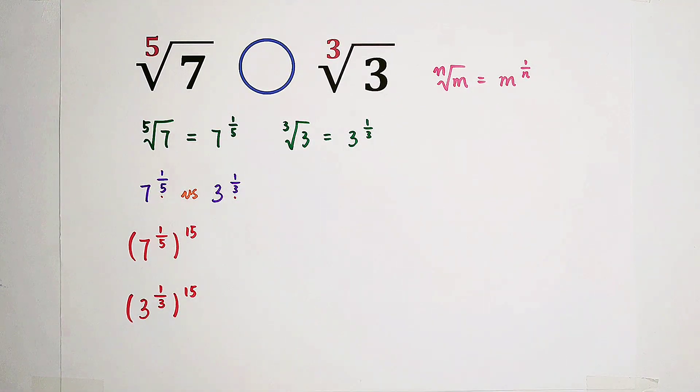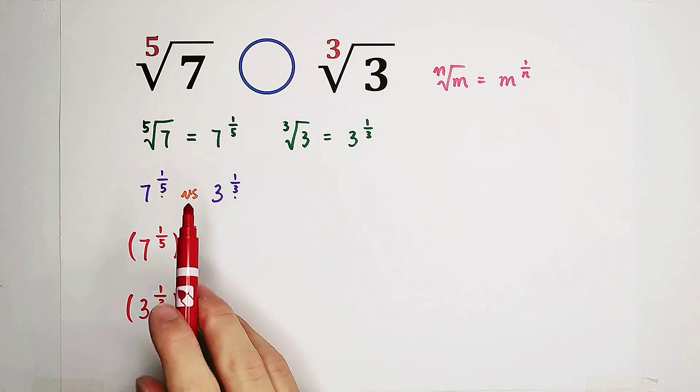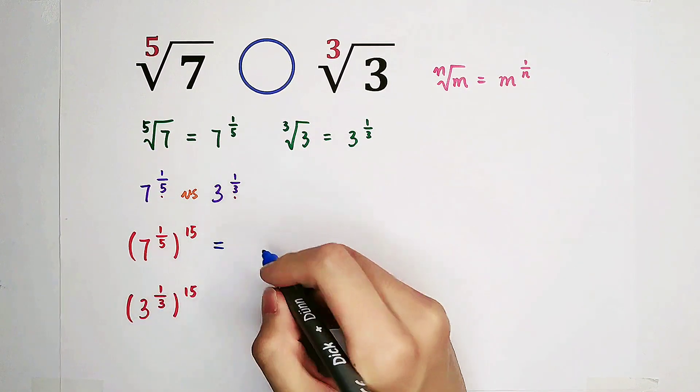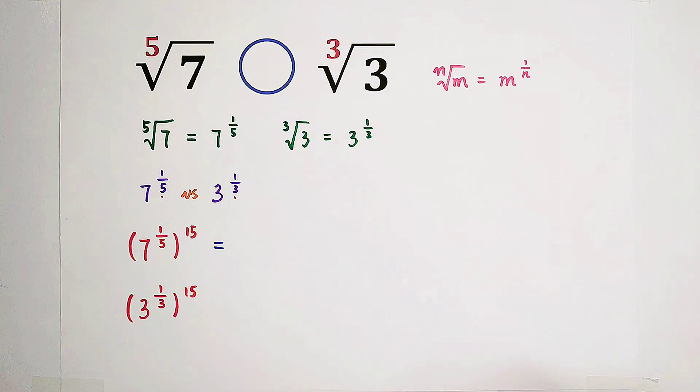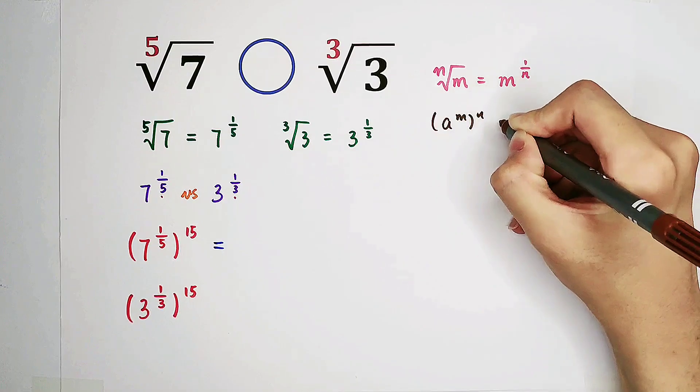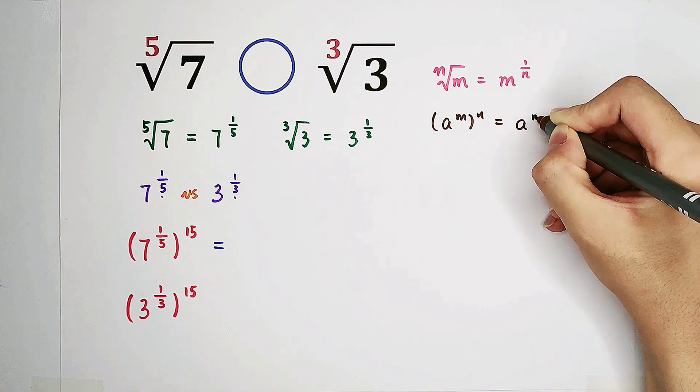Why 15? Because 15 is the least common multiple of 3 and 5. And now, this is equal to what? Another formula maybe. A to the power of m all to the power of n equals a to the power of m times n.